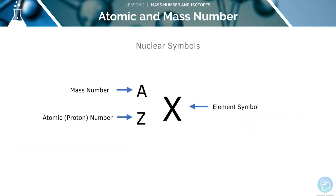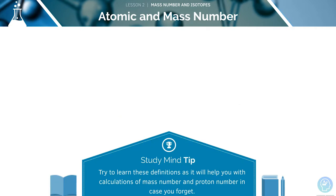It's useful to know what the nuclear symbols are for different elements. The atomic number and mass number are both found next to the element symbol. When going through this tutorial, try to make a note of and learn the different definitions we come across, as this will help when calculating the mass number and atomic number.